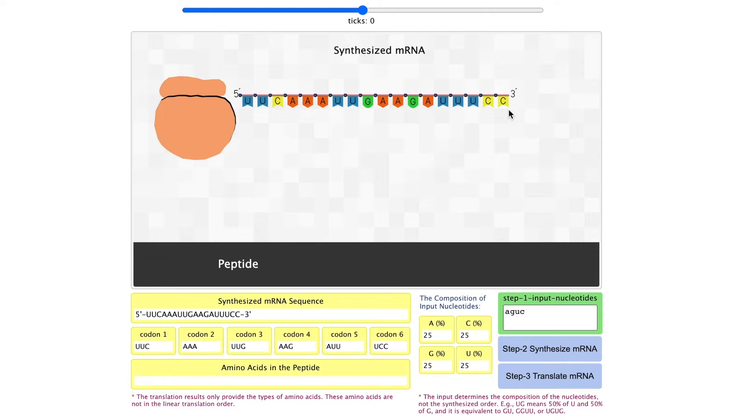An 18-base mRNA will be synthesized. You can see it in the simulation window. You can also see it in the yellow monitor box below. Six codons will be displayed in the monitor from the 5' end to the 3' end.